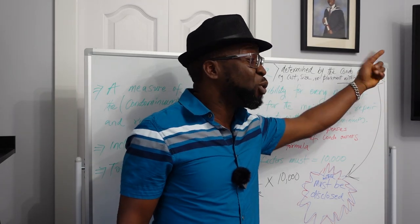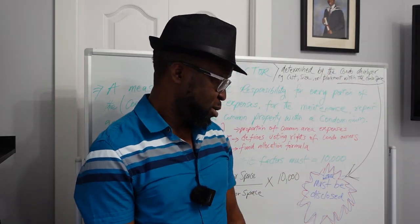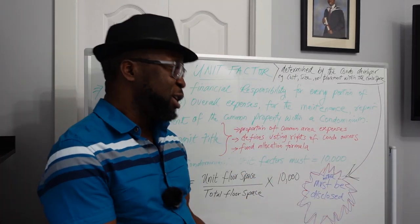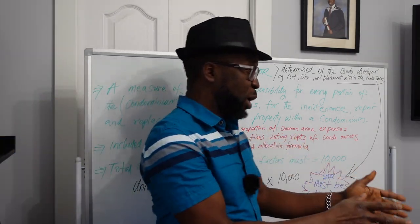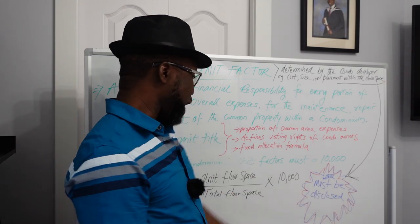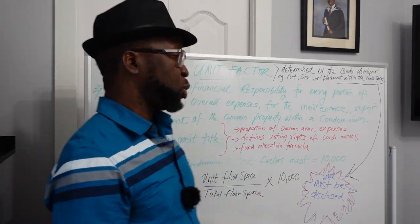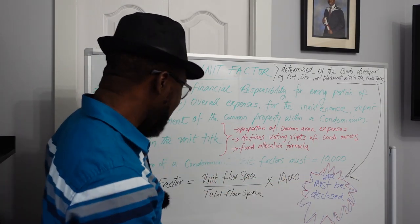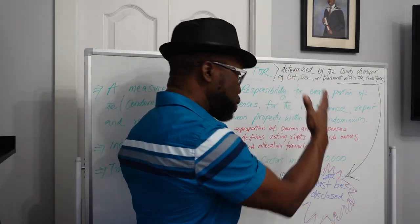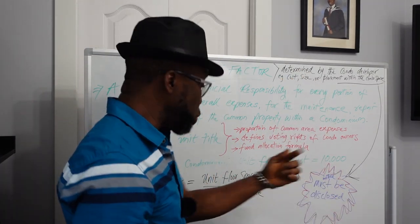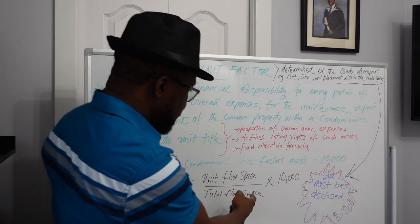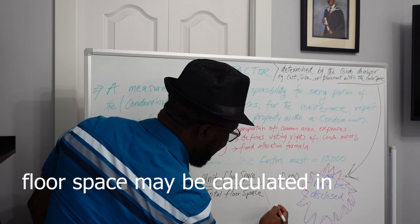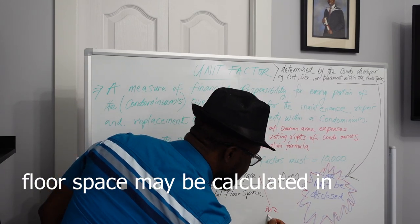The condo developer must disclose the method used so that when you're coming in, you already know your unit factor is determined by a specific method. For example, if they want to use floor space to determine it, they will state in the condominium documents that the unit factor has been determined using that method. The floor space can be measured in square meters or square feet, whichever they choose — the same unit applies throughout.